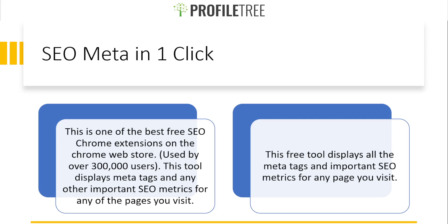With the SEO Meta Chrome extension, you get instant insights on metadata and crucial metrics including the title and its length, meta description, URL, robots tag, and your headers in order of appearance — h1 through h6. You also get the number of images with and without alt text, the number of internal and unique links, open graph and Twitter social data, and an XML sitemap.